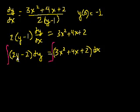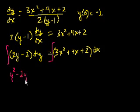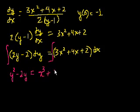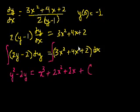The antiderivative of (2y minus 2) with respect to y is y squared minus 2y. On the right side, the antiderivative of (3x squared plus 4x plus 2) is x to the third plus 2x squared plus 2x plus c. That c takes care of the constant for both sides of the equation.